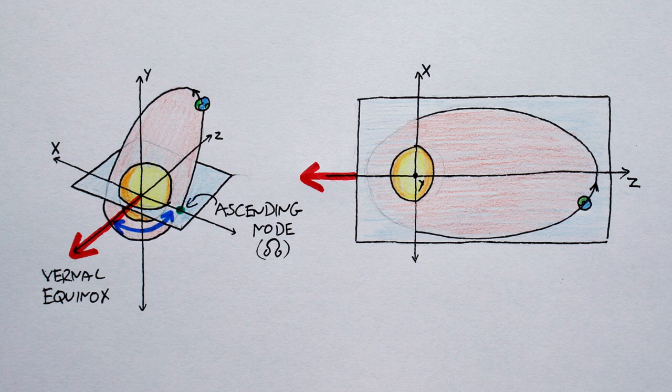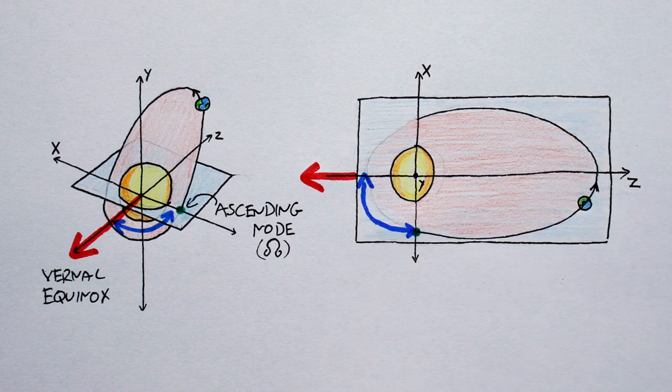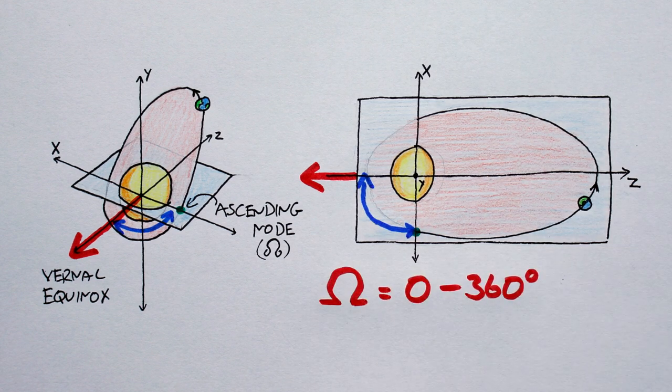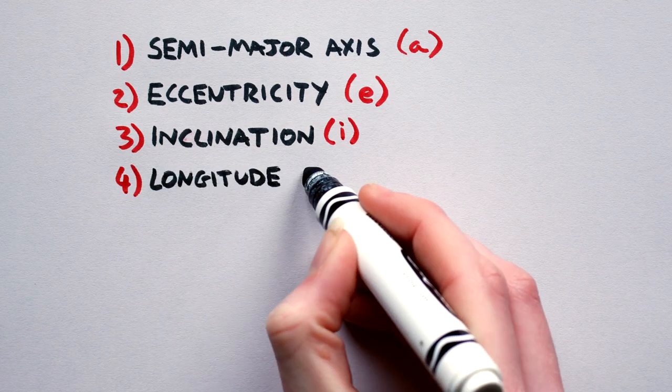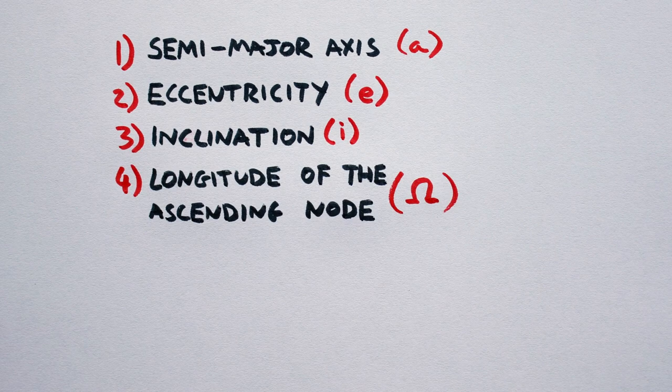Testament to the fact that we should never let astronomers name things. Now, despite the unwieldy name, it indicates the yaw of an orbit as measured in degrees in the equatorial plane, from the reference line to the ascending node. And it's denoted by the Greek letter omega and can go from zero to 360 degrees. Orbital parameter number four, know thy longitude of the ascending node.